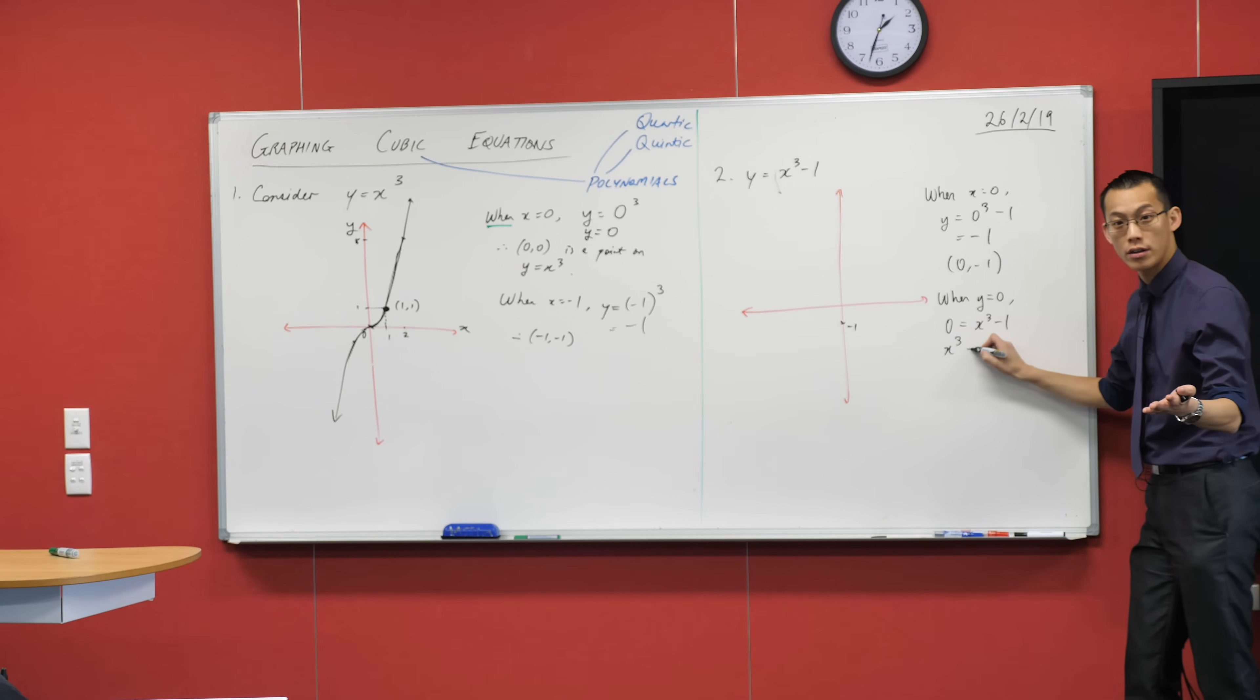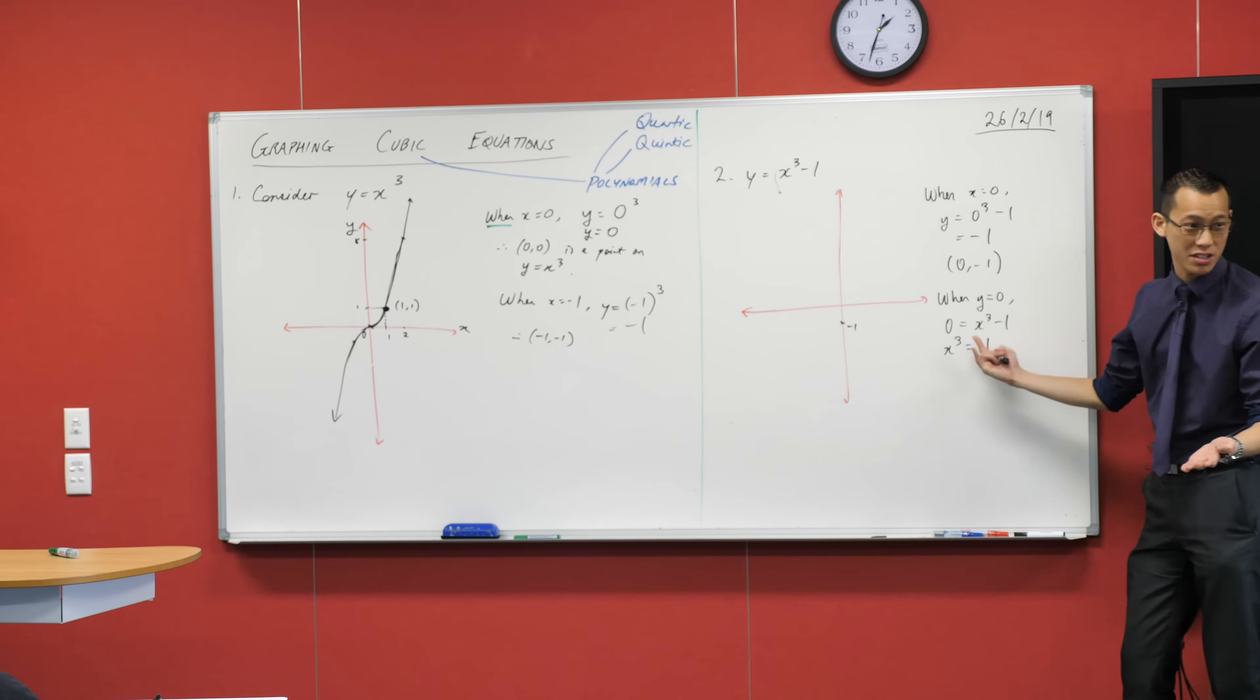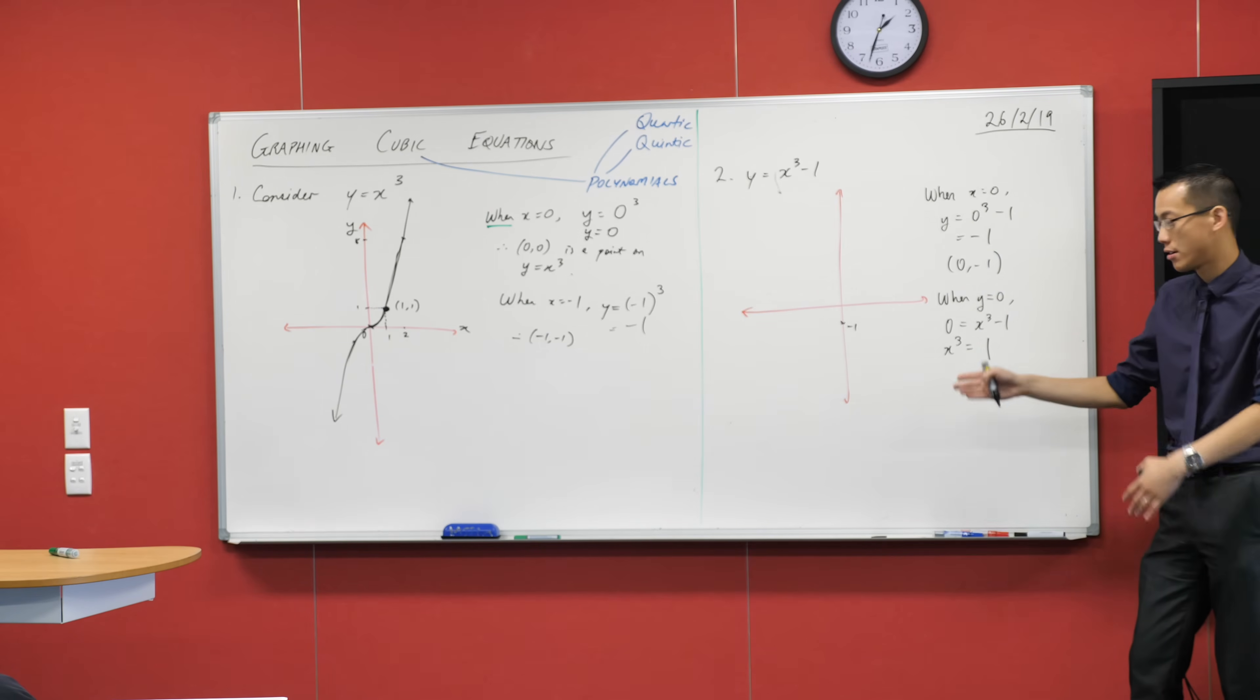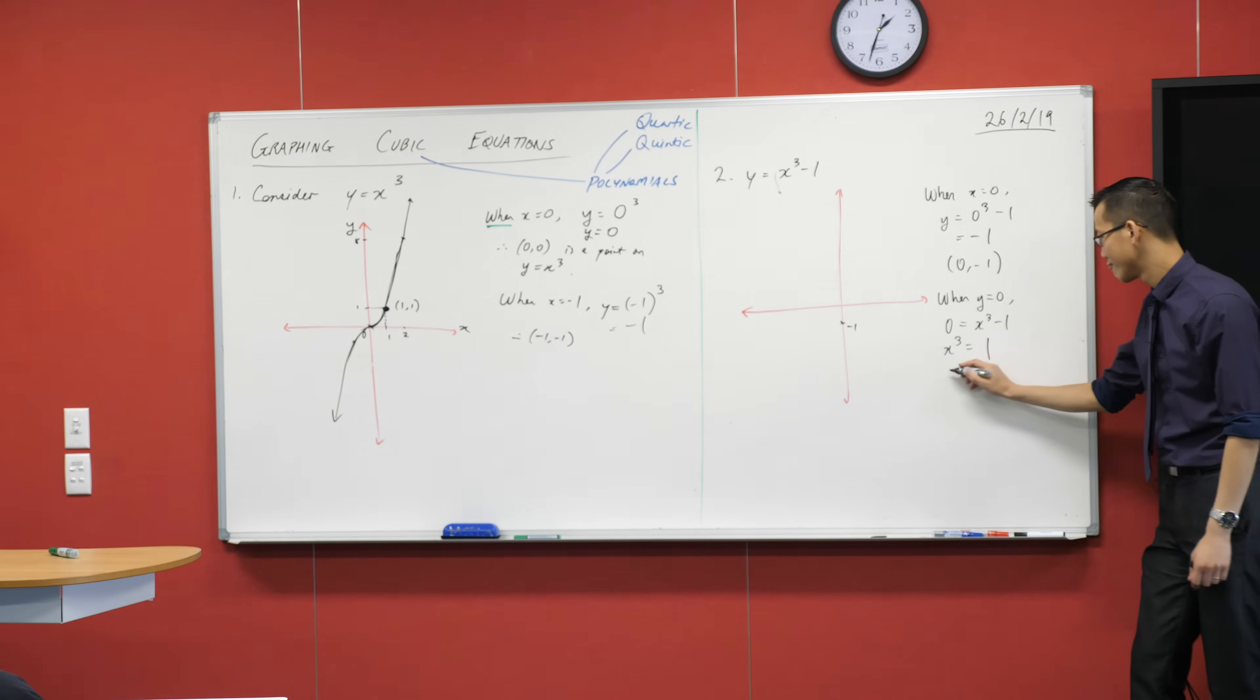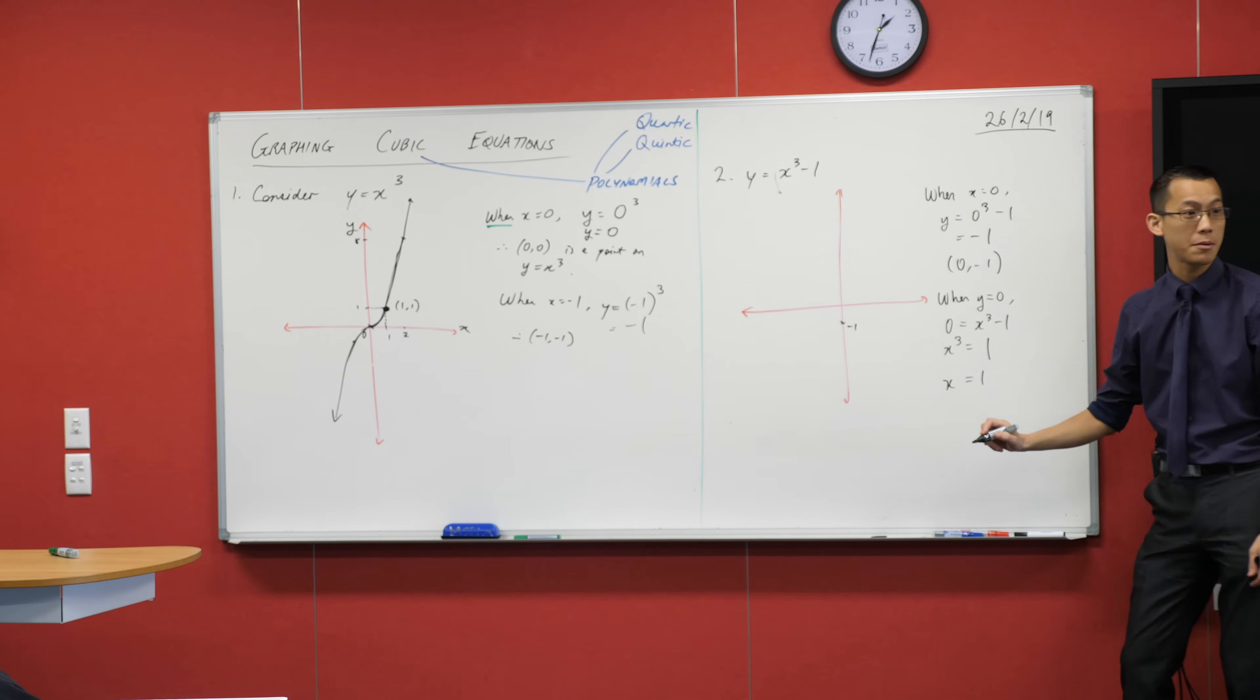So I can add 1 to both sides. And I'm going to switch the sides while I'm at it because the x is the thing I'm focused on. And what's the number that I multiply by itself three times to get 1? 1. Do you agree with that?